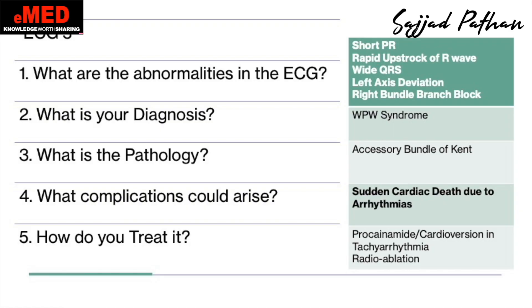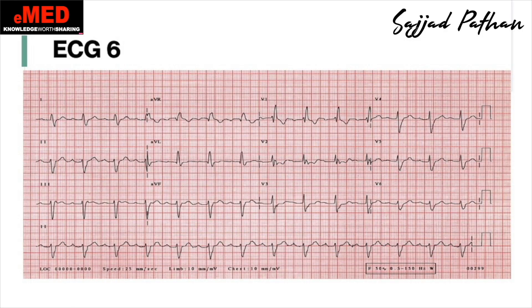The complication in WPW can be sudden cardiac death due to arrhythmias. How do you treat them? Do not give amiodarone, adenosine, beta blockers, calcium channel blockers, or digoxin. Instead, give procainamide. If they have atrial fibrillation associated with WPW, some say amiodarone can be used, but the safest medication is procainamide. You can also use flecainide. If the patient is unstable, treat it as an unstable tachycardia or bradycardia.